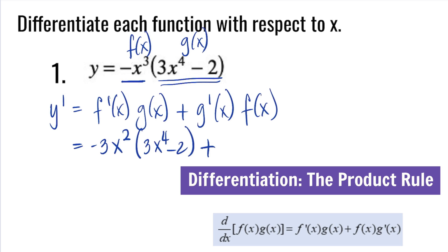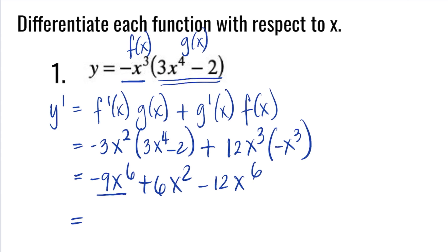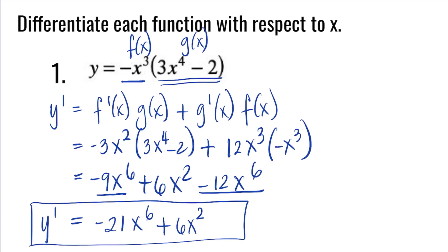Plus, we need the derivative of 3x to the fourth minus 2. The derivative of 3x to the fourth is 12x cubed, and the derivative of the constant is 0. Multiply by f(x), negative x cubed. Distributing: negative 3x squared times 3x to the fourth is negative 9x to the sixth; negative 3x squared times negative 2 is plus 6x squared; 12x cubed times negative x cubed is negative 12x to the sixth. Combining like terms: negative 9x to the sixth and negative 12x to the sixth gives negative 21x to the sixth. So y prime equals negative 21x to the sixth plus 6x squared.